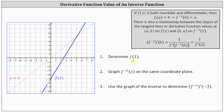To determine f of one graphically, we find the point on the graph of f of x where x equals one, which would be this point here. The ordered pair for this point is one comma negative three, which indicates when x is one, the output or y value or function value is negative three, and therefore f of one equals negative three.